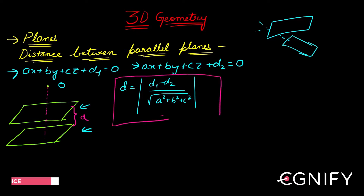This is the formula you need to remember. Basically, you subtract the constants and take the square root of the sum of the squares of the direction ratios of the normal to the plane. Let's see how we get this formula — it's again very simple.